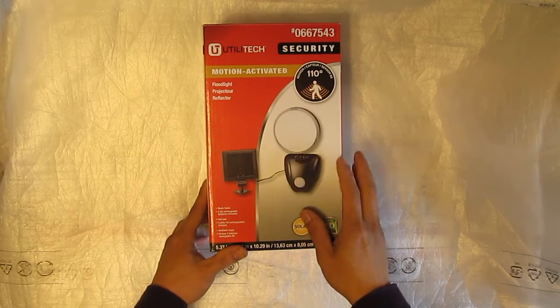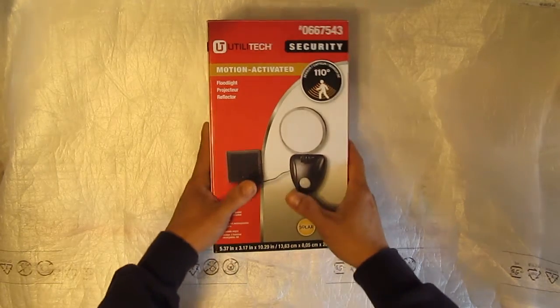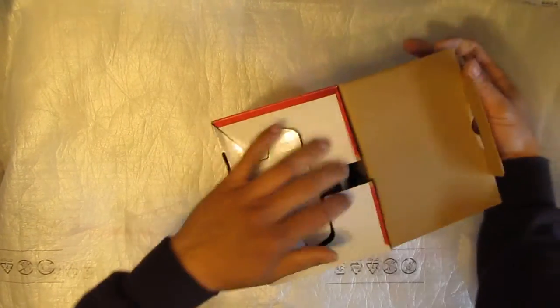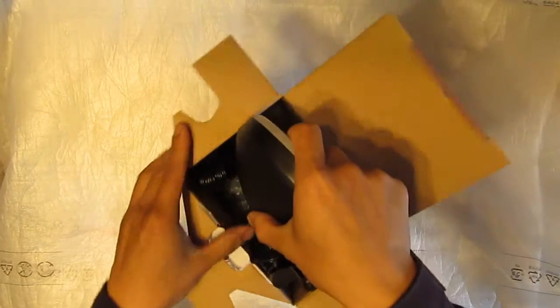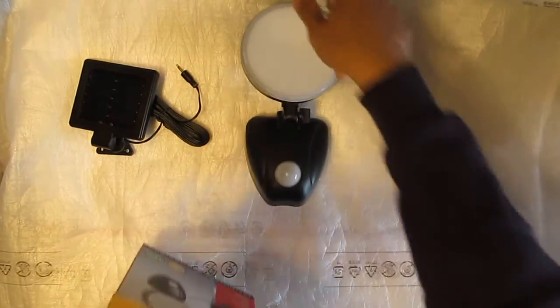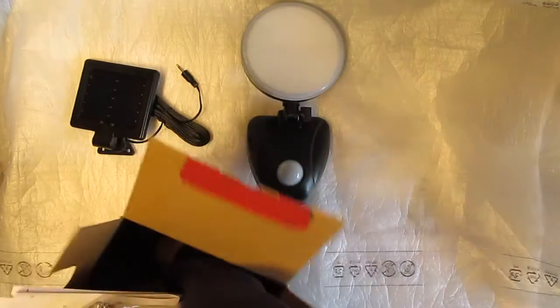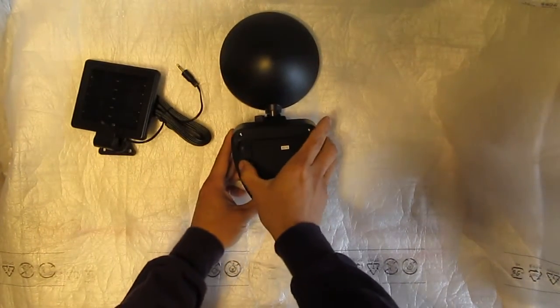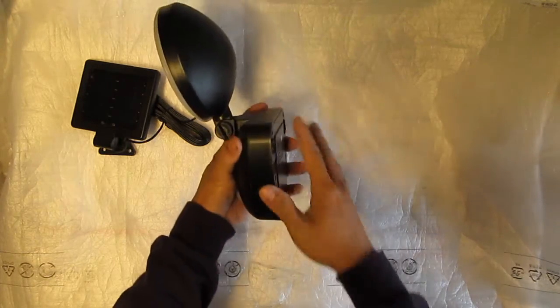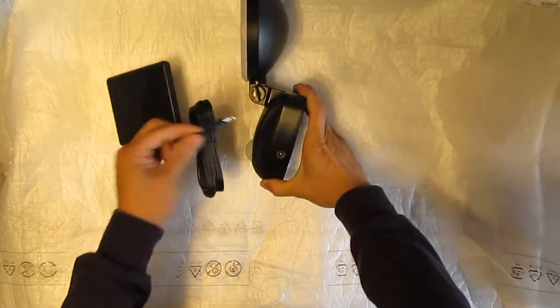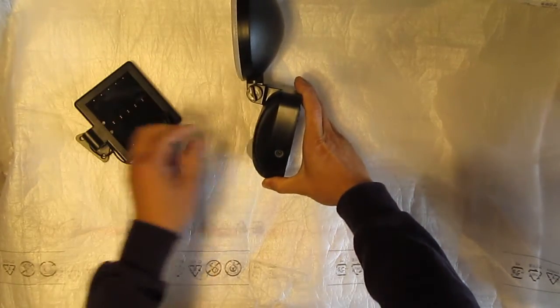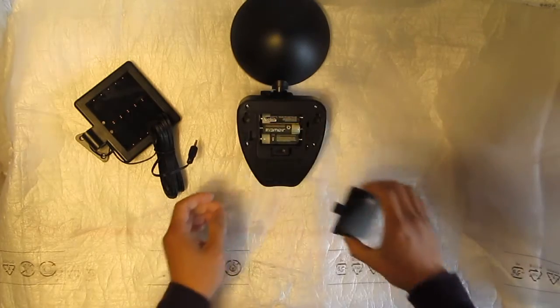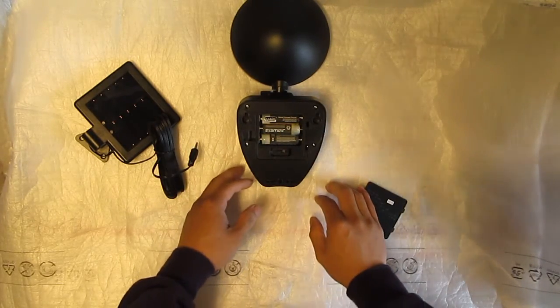So let's first open it up and check it out. There's a solar panel, the lights, manual, and mounting screws. Take a look at this light - there's a plug here for the solar panel, so you plug the panel on the side. Here there are three nickel metal hydride rechargeable batteries.